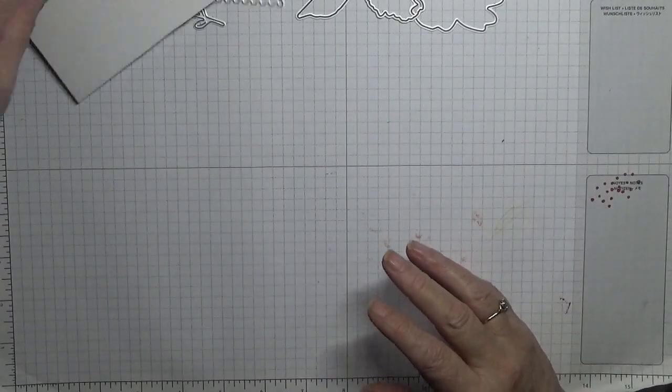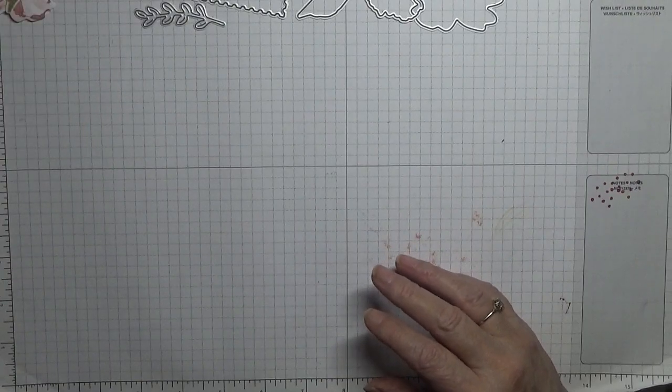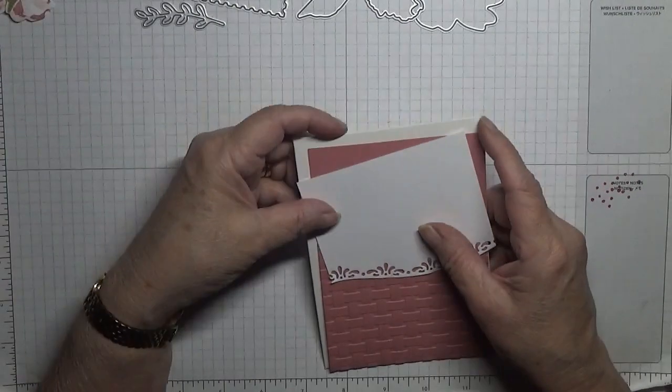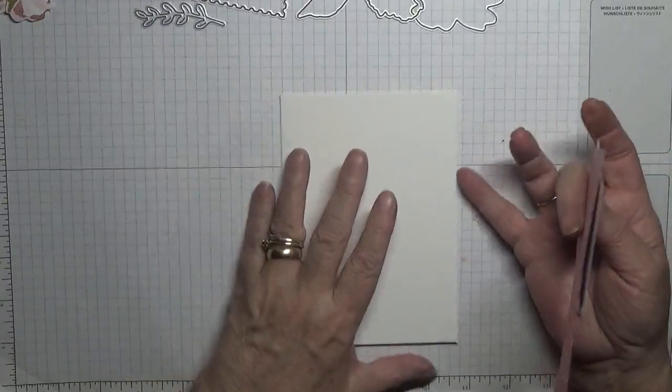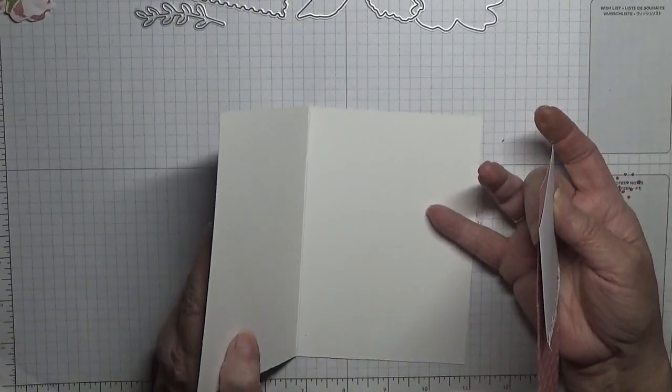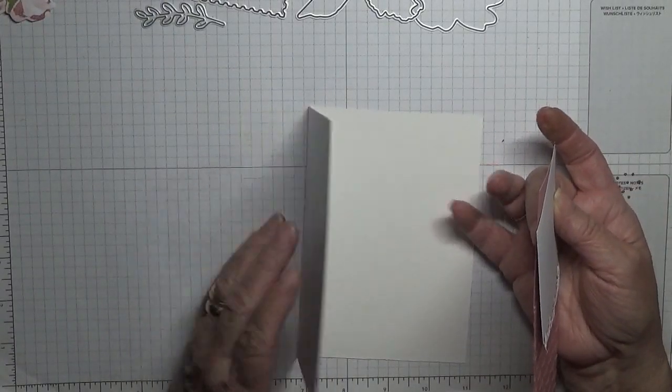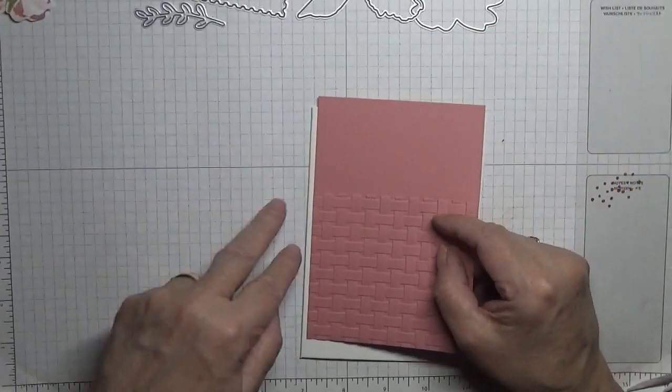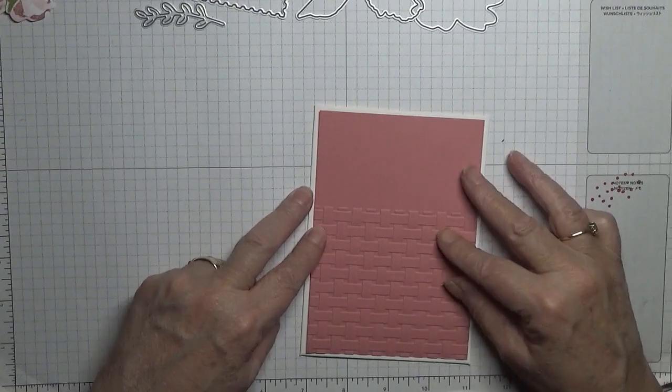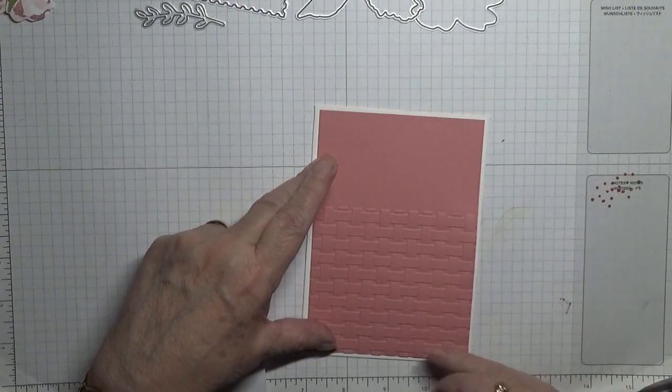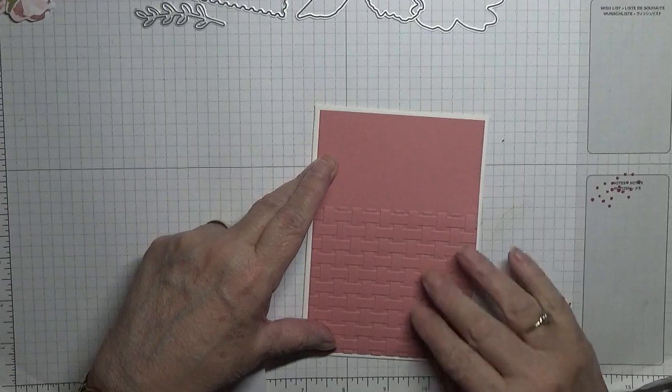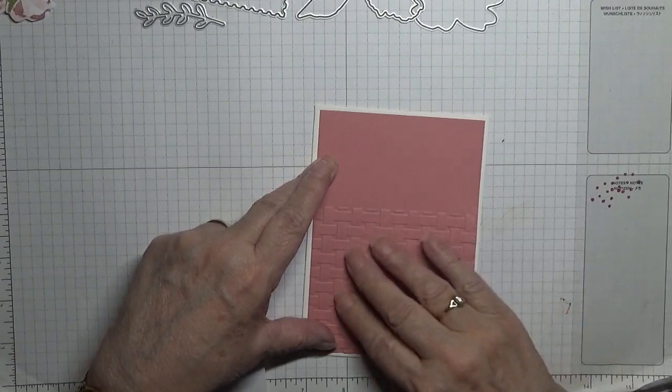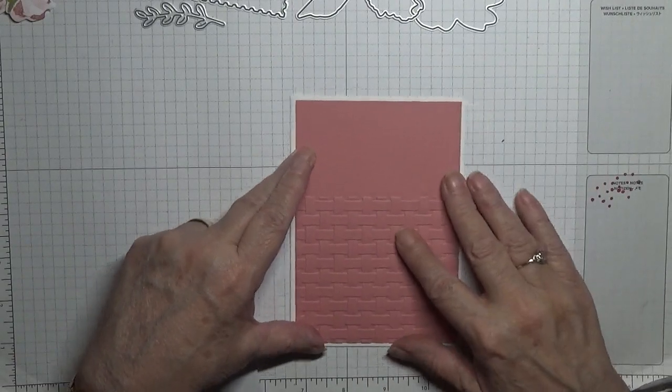Right, then the card. I'm going to change the color and I'm going to use Rococo Rose. So I've got a card base of eight and a quarter by five and seven eighths, scored at four and one eighths, folded in half. A piece of Rococo Rose at five and five eighths by three and seven eighths, and I have embossed half of it with the basket weave embossing folder.